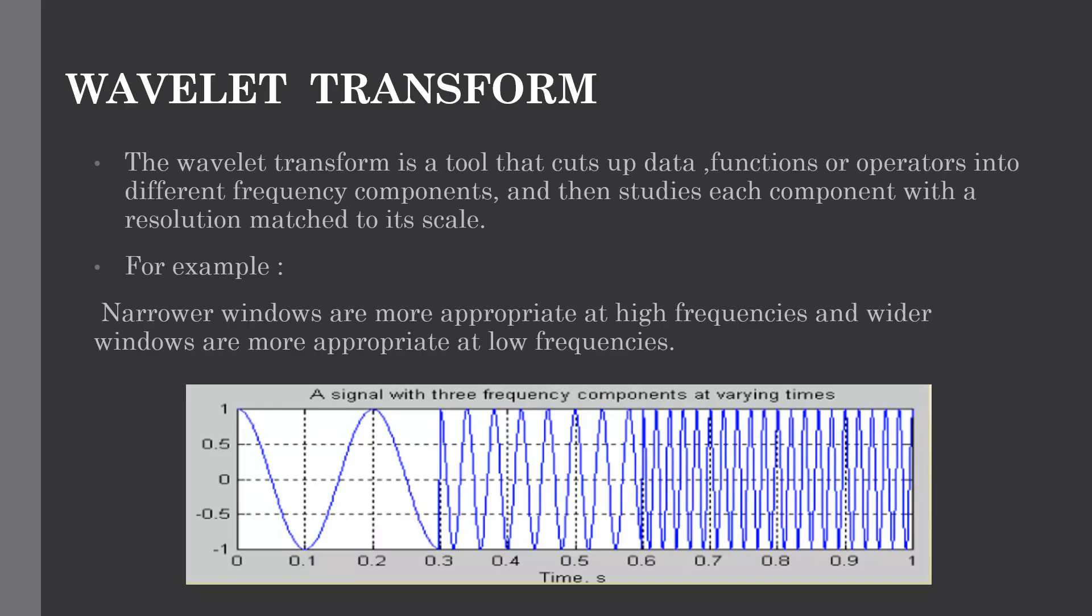A wavelet transform is a tool that cuts or divides the signal data into different frequency components and then studies each component with a resolution matched to its scale. For example, if there is a signal with three frequency components at varying times, we use different types of windows to study each frequency component. The narrower windows are more appropriate to study the waves at high frequencies and wider windows are more appropriate to study waves at lower frequencies.